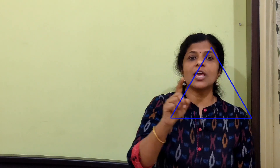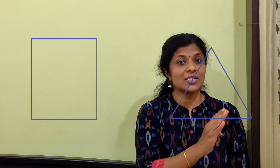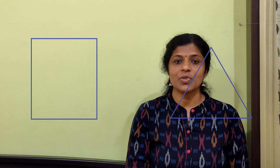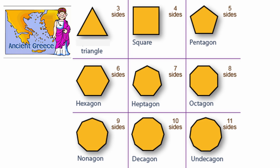Is this shape the same as this shape? No — this shape has three sides, and this shape has four sides. Based on the number of sides or number of vertices, we give different names to each shape. A shape with three sides is called a triangle. Four sides is called a quadrilateral. Five sides is a pentagon. Six sides is a hexagon.